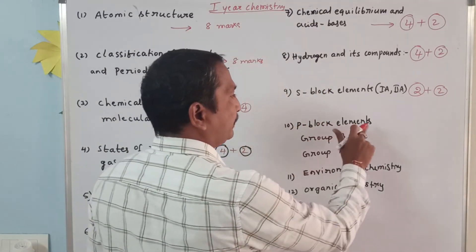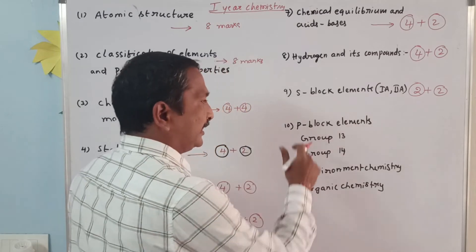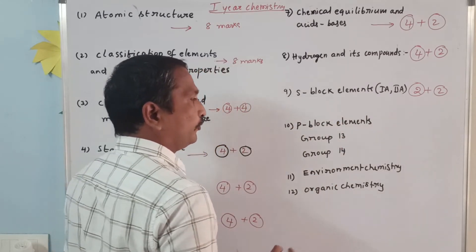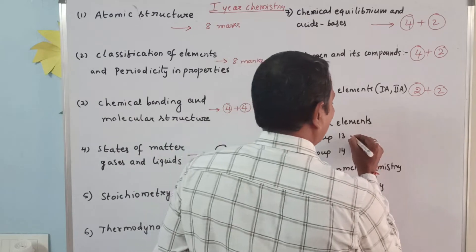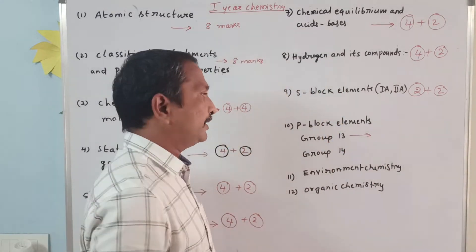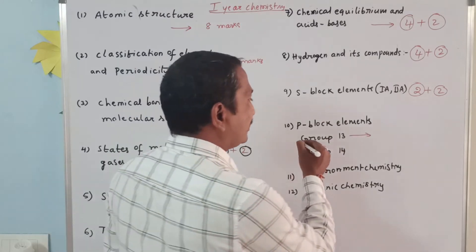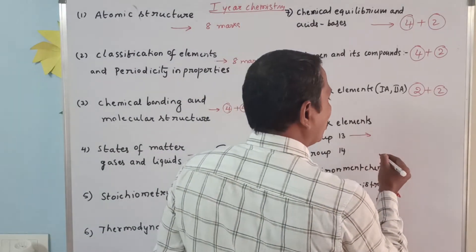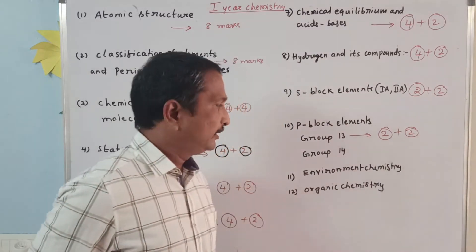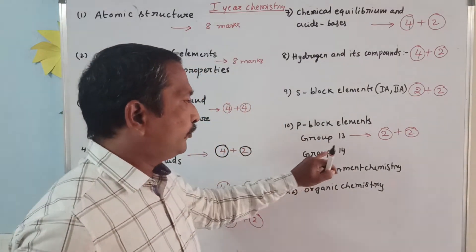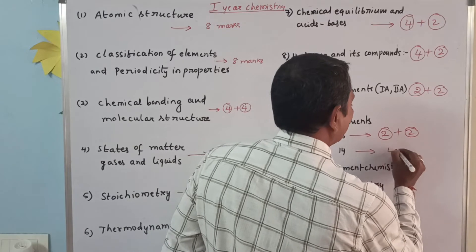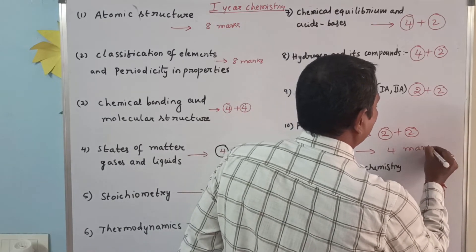Tenth unit: P-block elements. In P-block elements, there are two groups — Group 13 and Group 14. Group 13 is called the Boron family; its weightage is four marks, that is two plus two. Group 14 is called the Carbon family; its weightage is four marks, and there is only one four-mark question.